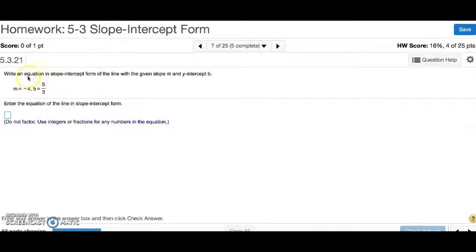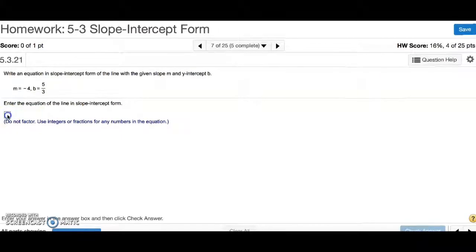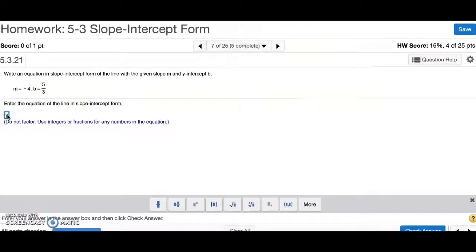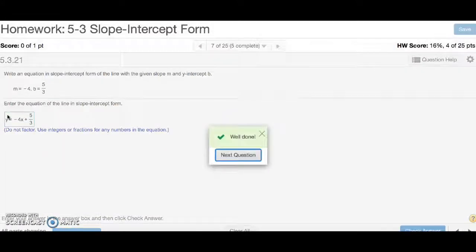Number 7, we are writing this in slope-intercept form, which is y equals mx plus b. So you have y equals, m is negative 4, so negative 4x plus b. And b is 5 over 3, so plus 5 over 3. And that's number 7.